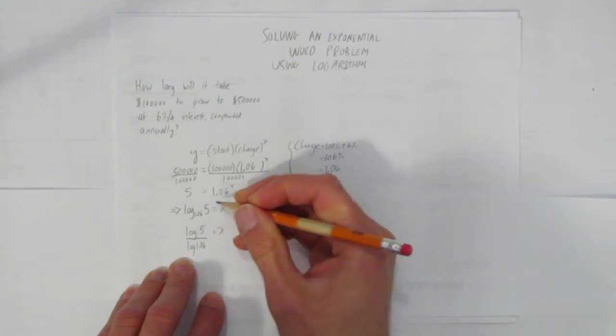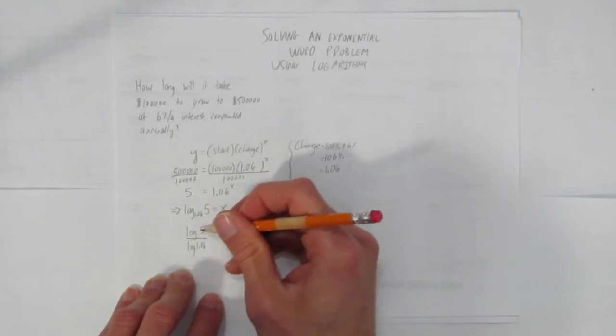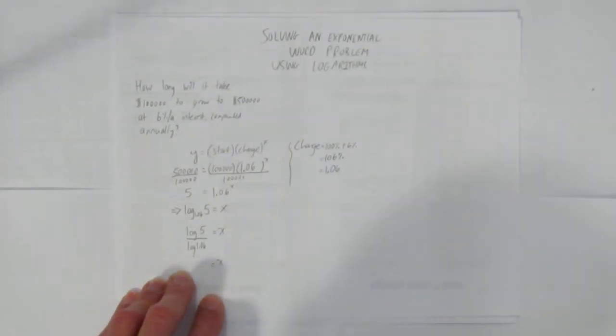Again, that rule is you can change any logarithm, log AB, to be log of B over log of A, and a new base introduced. In this case, I chose base 10, so I can just punch it right into my calculator.